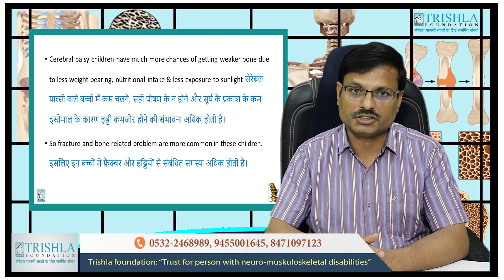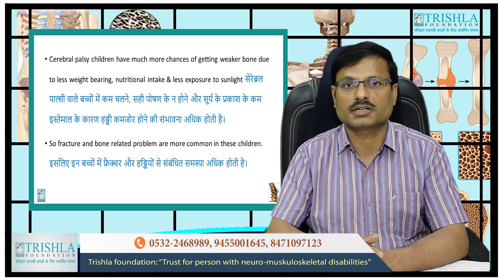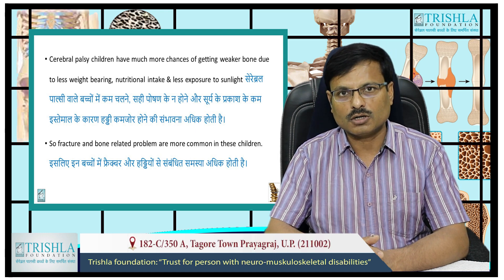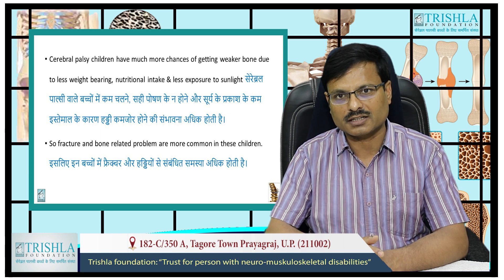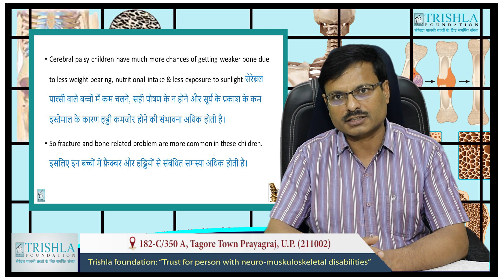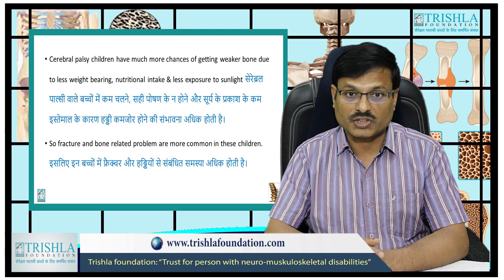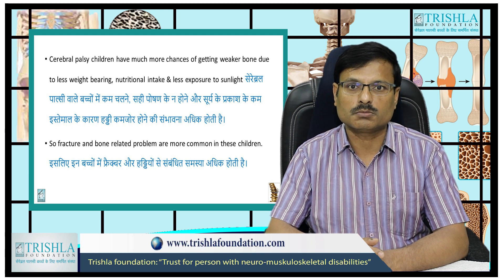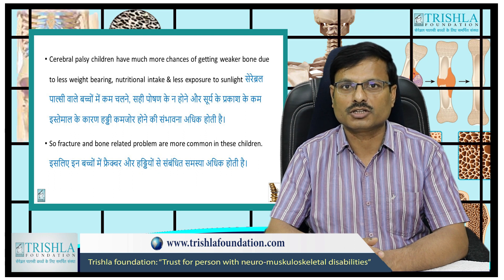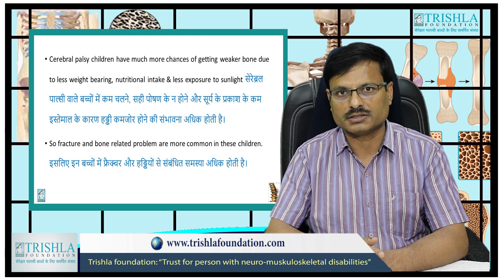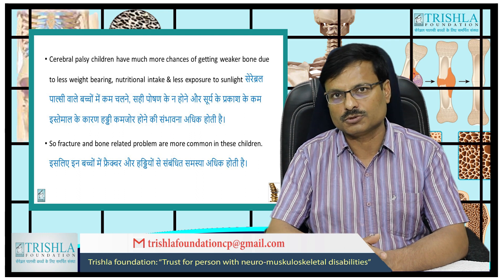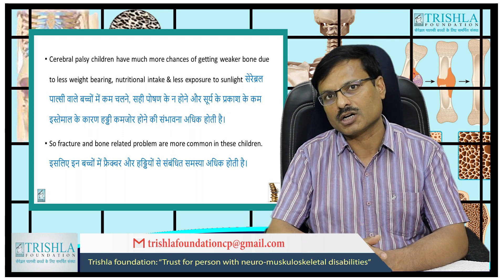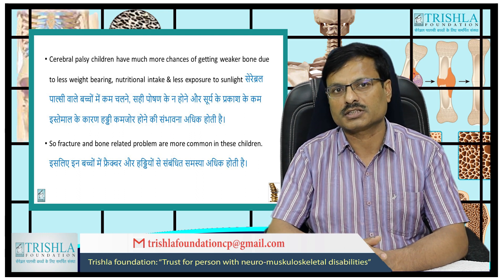Cerebral palsy children have much more chances of getting weaker bones because they have less weight bearing, less physical activities, less nutritional intake, and less exposure to sunlight. So fracture and bone-related problems are more common with cerebral palsy children, especially those who are severely disabled — GMFCS level 4 and 5 — who are not able to walk and not able to do many activities.